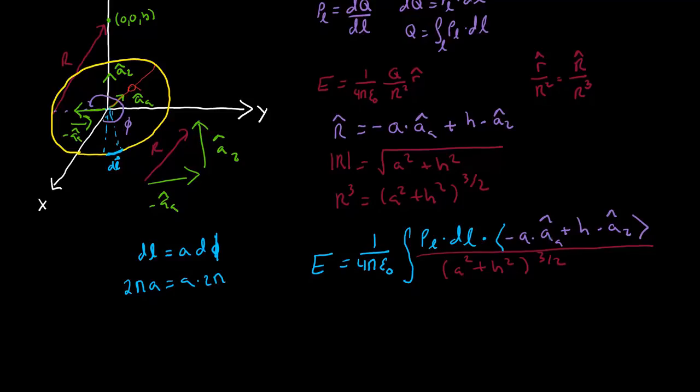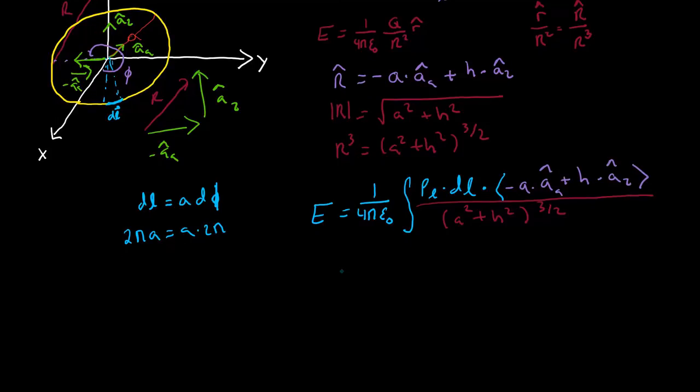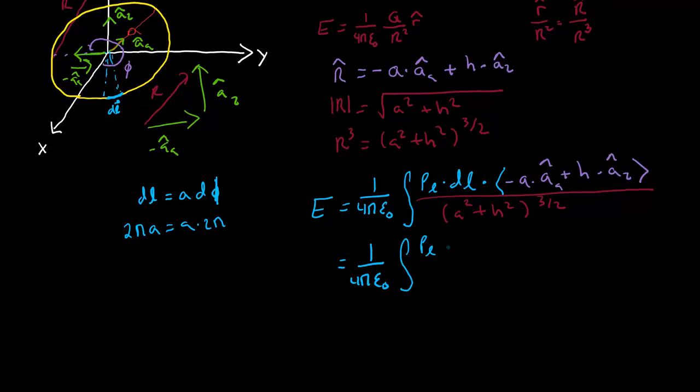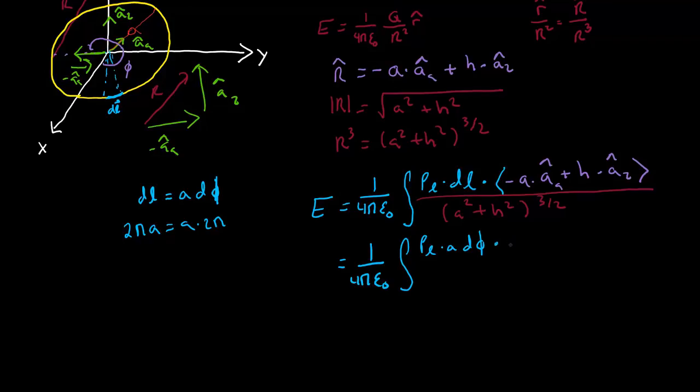And then the other thing is, I could realize that the AA is actually always going to give me like, they're going to always cancel out because there's symmetry involved. So what I'm going to actually write this as, integral of rho L times A D phi times, get rid of this AA and I'll have times H AZ all over (A squared plus H squared) to the three-half.